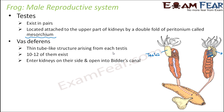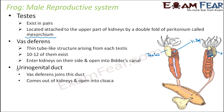Next is the vas deferens — a thin tube-like structure arising from each testis. About 10 to 12 of them exist. They enter the kidneys on their side and open into Bidder's canal. You can see this tube-like structure in the diagram; it carries the sperms produced by the testes. These vas deferens enter the kidneys and then open into Bidder's canal.